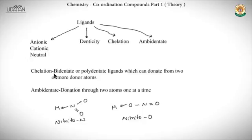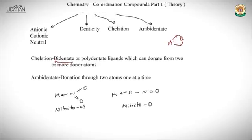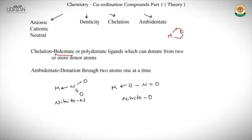Chelation applies to bidentate and polydentate ligands. What happens is that the same ligand donates two or more pairs of electrons to the metal, forming a ring structure. This ring formation gives added stability. You will study chelation in further detail in general organic chemistry.